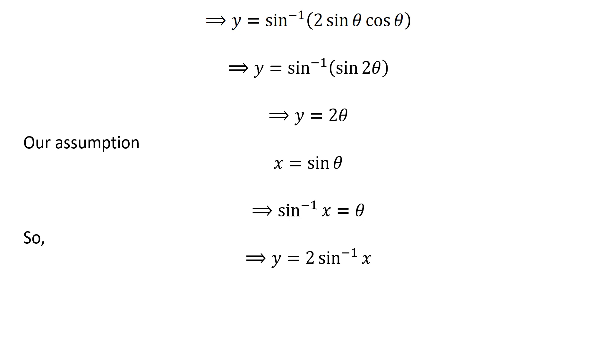Thus, the simplification of inverse sine of 2 times x times square root of 1 minus x squared is 2 times inverse sine of x.